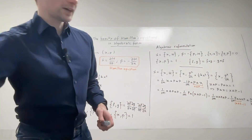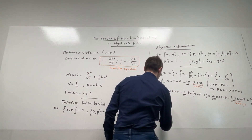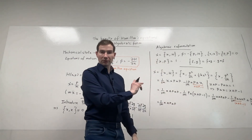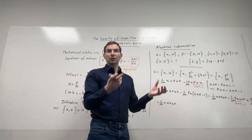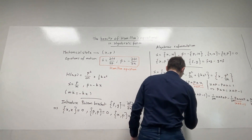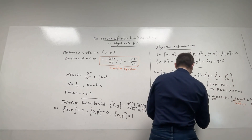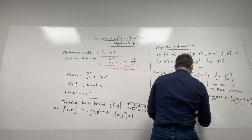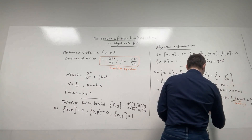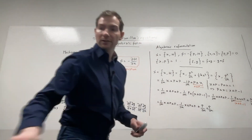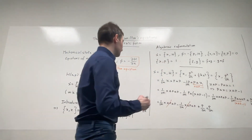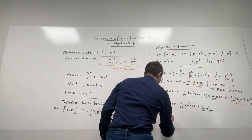Substituting and distributing, I get (1/2M)(X △ P △ P) − (1/2M)(X △ P △ P) + P/2M + P/2M. The first two terms cancel, and I'm left with P/M. So X-dot = P/M — derived purely from the algebra, without any differentiation.